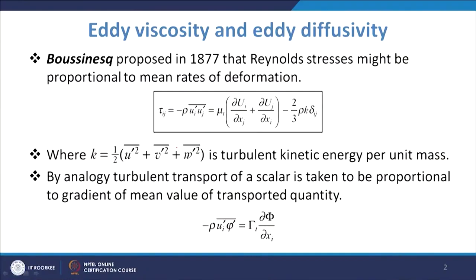In this expression, k is the turbulent kinetic energy defined as k = ½(u′² + v′² + w′²), which is the turbulent kinetic energy per unit mass. The term μ_t is the turbulent viscosity or eddy viscosity, and ν_t = μ_t/ρ is the kinematic turbulent viscosity.